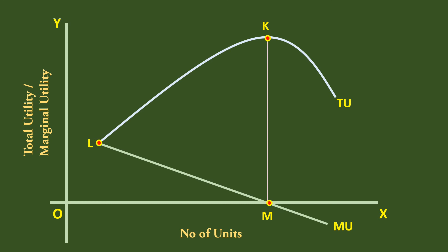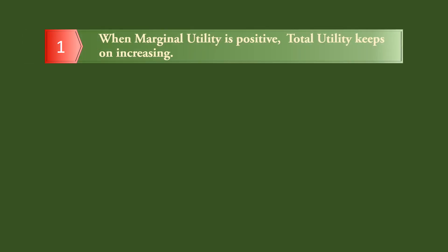Then state the relations one by one. One: When marginal utility is positive, total utility keeps on increasing.